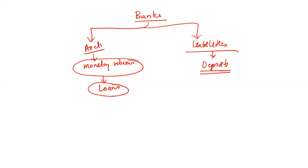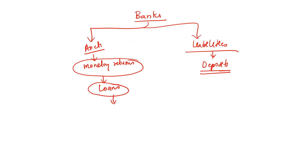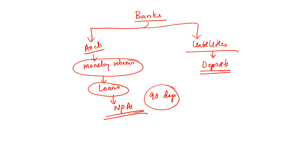If you are providing loans and they become non-performing assets, that is NPA. NPA is when you are providing loans as EMIs and those loans become non-performing assets — that is the name given to that bank loan. The EMI is considered overdue at 90 days.